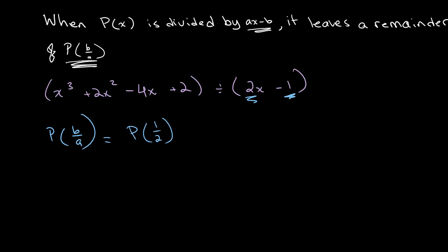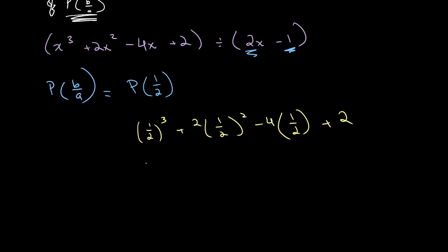And we can plug this into our polynomial. And we will get (1/2)³ + 2(1/2)² - 4(1/2) + 2. This gives us 1/8 + 2 times 1/4 - 4 times 1/2 + 2.